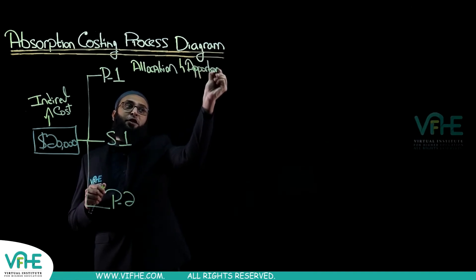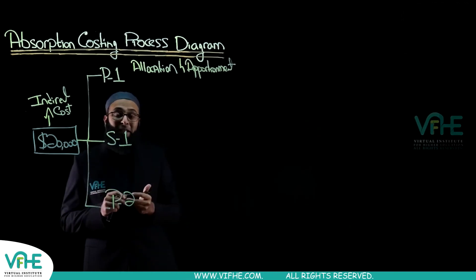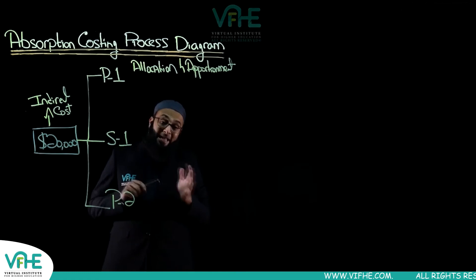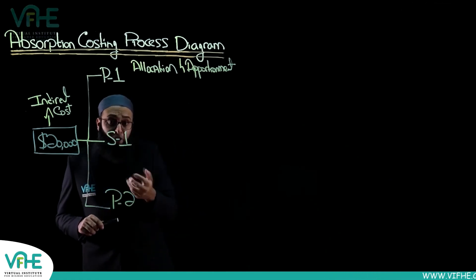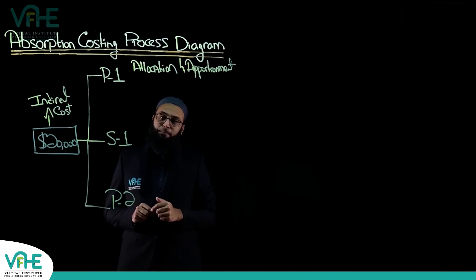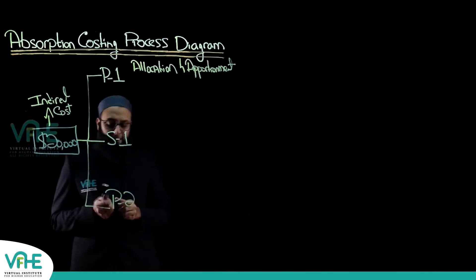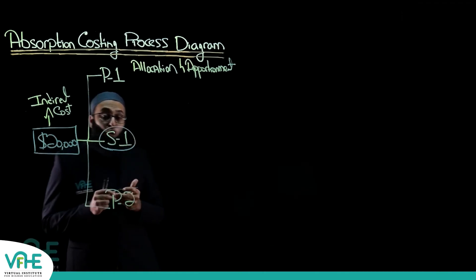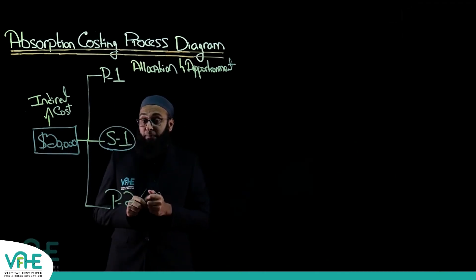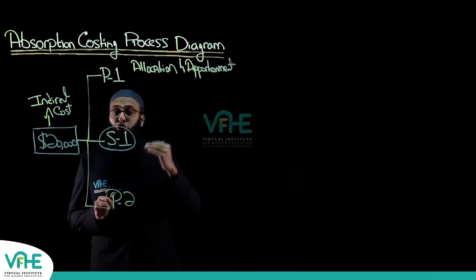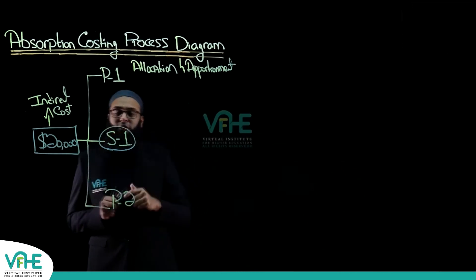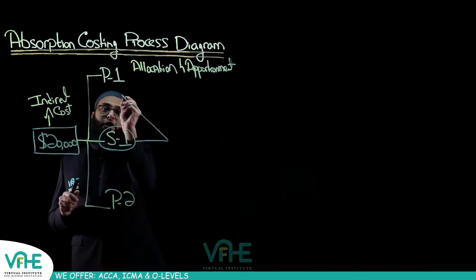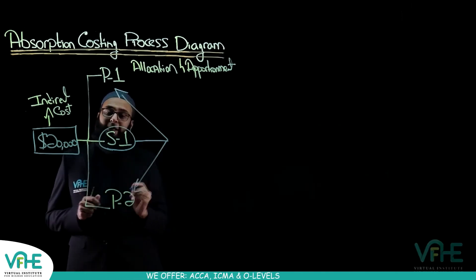After allocation and apportionment have been done to all three departments, all overheads are now charged to these departments. However, one question arises — one of these is a service department. The overheads charged to the service department should be recharged to the production departments, and this gives rise to the concept of reapportionment of overheads.